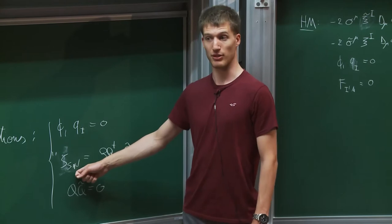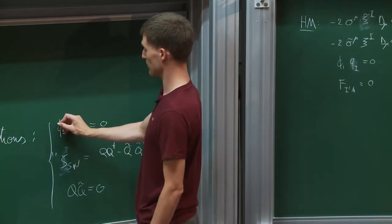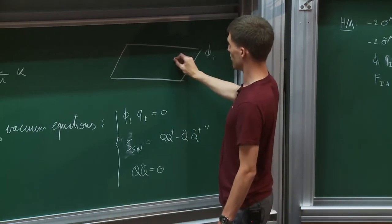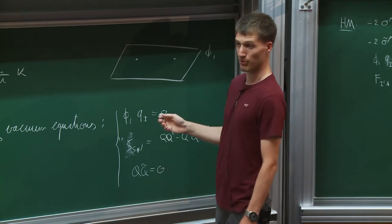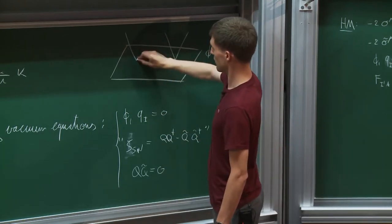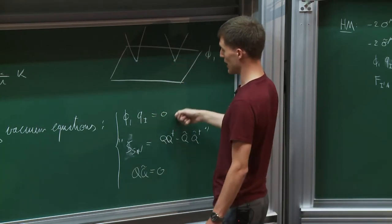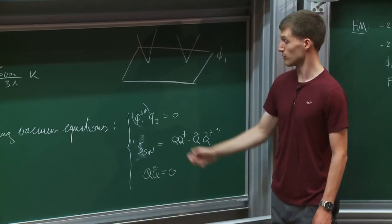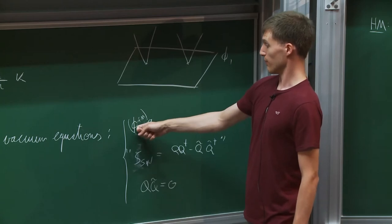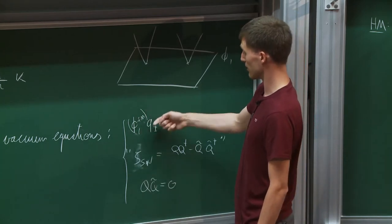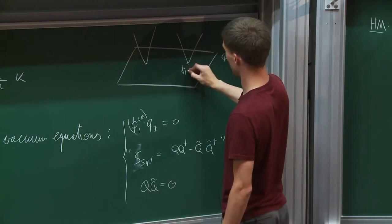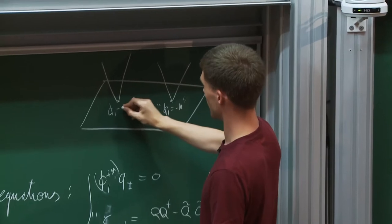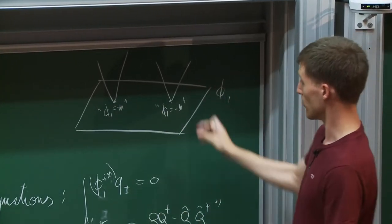The picture is exactly the same as Francesco had this morning: you have your Coulomb branch parameterized by Phi_1, and at certain points in the Coulomb branch there is a possibility of having a Higgs branch. At those points this equation is satisfied — reading it as also containing mass terms, since masses are background values for a vector multiplet coupled to the flavor symmetry — precisely the same picture as Francesco had.